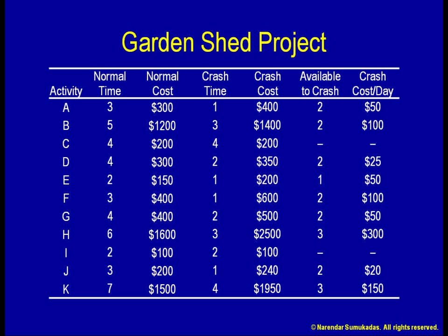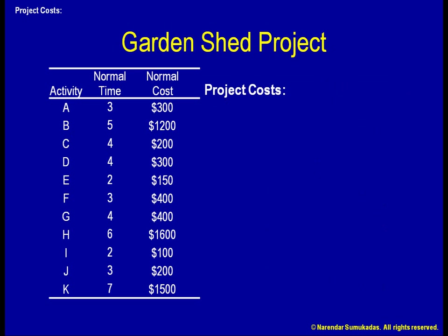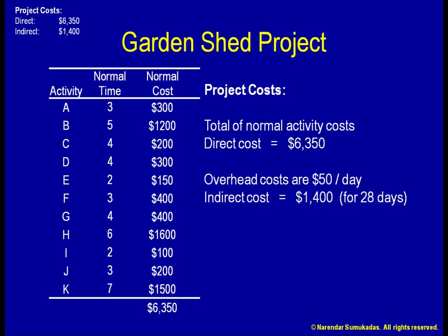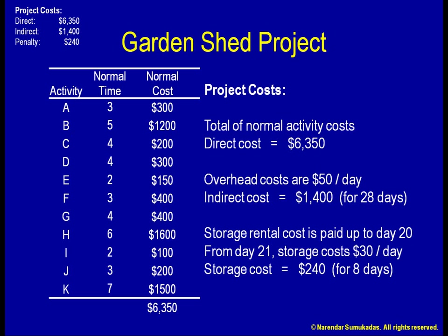I can see that the cost of crashing varies from one activity to the other. Meanwhile, some activities cannot be crashed at all — namely C and I. Adding up the normal costs of all my activities, I get $6,350. These are called my direct costs. In addition, I have $30 per day storage rental for 8 days, which comes to $240. These costs are equivalent to penalty costs that may be applied by a client if a project exceeds a certain deadline. My total project cost for the normal schedule of 28 days is $7,990.